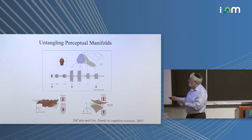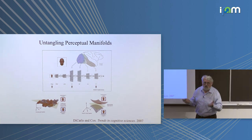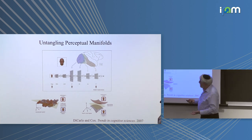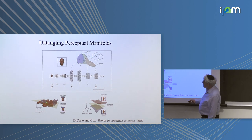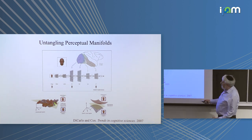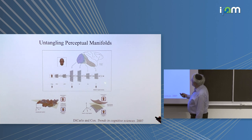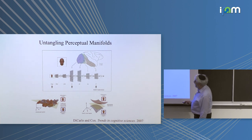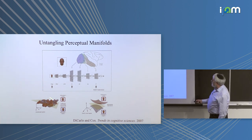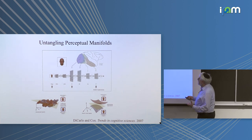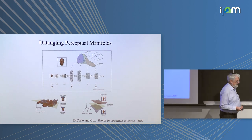We think about the quality of the representation of a category at a given stage by the ability to decode category information via a linear readout. You have to limit the readout — if you don't limit it, you can always design a complicated readout. In fact, the brain is a complicated readout. So in order to understand the difference between the representation at the top layer and the input layer, you have to ask whether object or category information is accessible by a simple readout at the given stage.